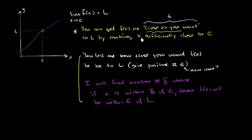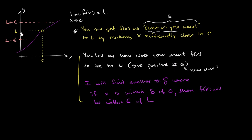Someone is saying how close they want f of x to be to l, and the burden is to find a delta where, as long as x is within delta of c, f of x will be within epsilon of the limit. So let's make this clearer by diagramming. You show up and say you want f of x to be within epsilon of our limit. This point right over here is our limit plus epsilon, and this right over here is the limit minus epsilon.